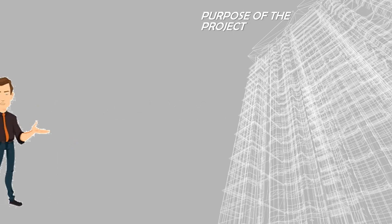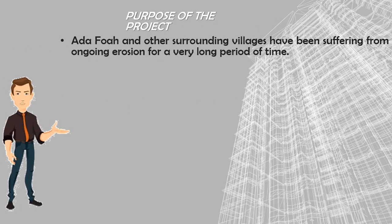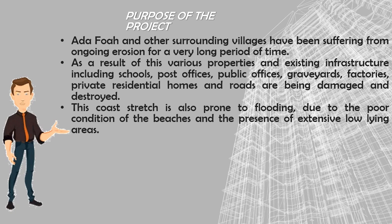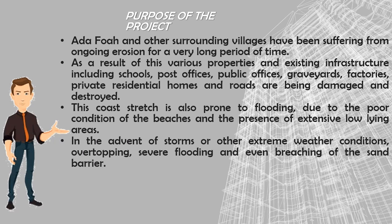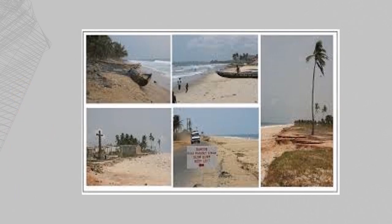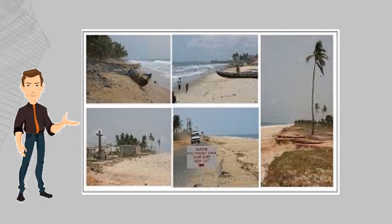The purpose of the project: Ada Foie and surrounding villages had been suffering from ongoing erosion for a very long period. As a result, various properties and existing infrastructure including schools, post offices, public offices, graveyards, factories, private residences, and roads were damaged and destroyed. The coastline is also prone to flooding due to poor beach conditions and extensive low-lying areas, with severe flooding and breaching of sand barriers possible during storms, with risk to human life, property, and livelihoods.